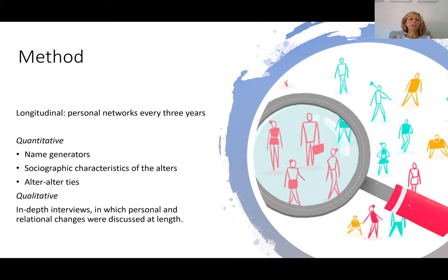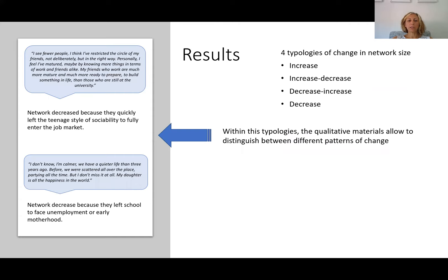They also collected in-depth interviews in which individuals were allowed to discuss at length personal and relational changes. They analysed the quantitative aspects by simply counting the number of ties that each personal network had at each time point, and they could create four different typologies of networks: networks that increase over time, networks that decrease over time, networks that increase at the beginning and then decrease, or decrease and then increase. These descriptive quantitative typologies were then illustrated with qualitative interviews, in which they found very different patterns of change that generated the same type of structural change.